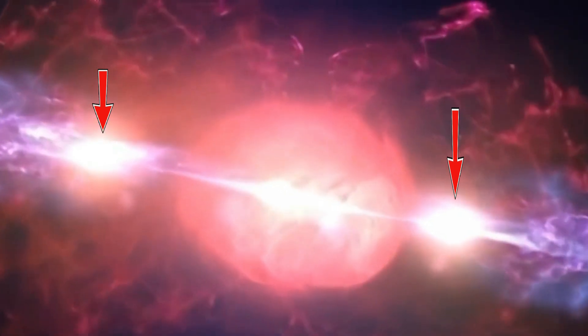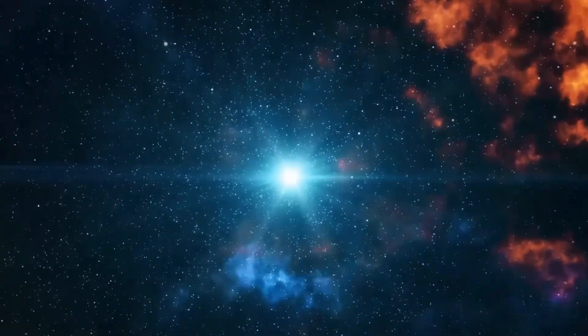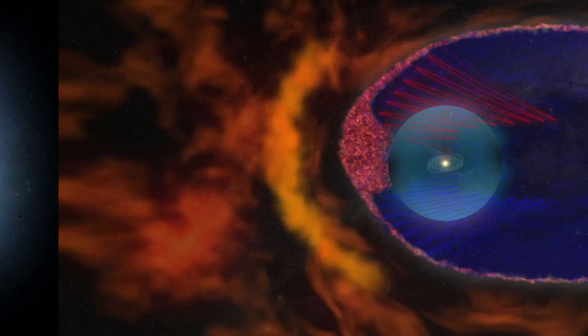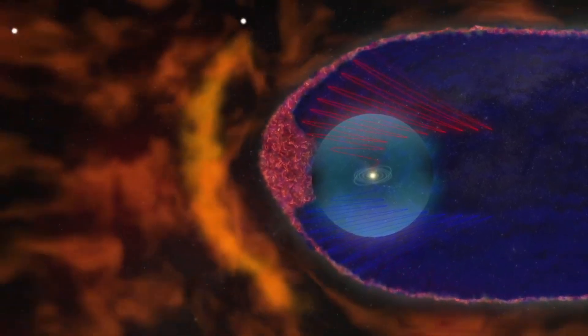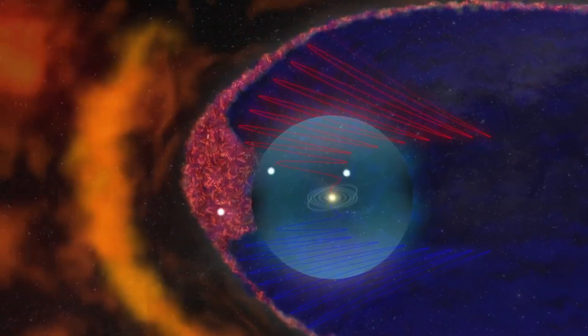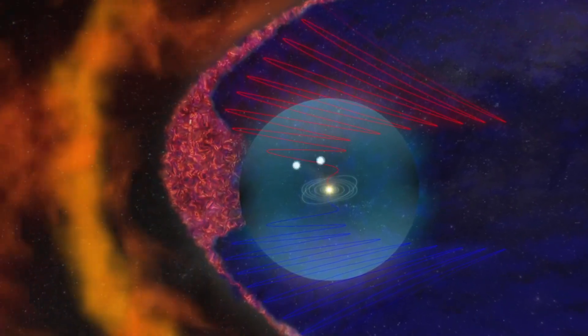One of the key impacts of these energetic events could be their influence on star formation within the galaxy. Star formation is a delicate process, heavily influenced by the surrounding environment. Intense explosions or outflows, like those that could have caused the bubbles, can trigger or suppress star formation in different regions of a galaxy. In the case of the Milky Way, the energetic activity from the supermassive black hole or a burst of star formation near its center could have significantly altered the balance between gas inflows and outflows.